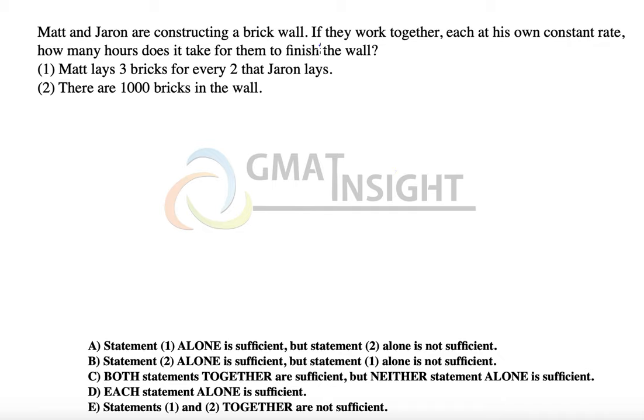Matt and Jaren are constructing a brick wall. If they work together, each at his own constant rate, how many hours does it take for them to finish the wall? We need to find out the combined rate of Matt and Jaren.